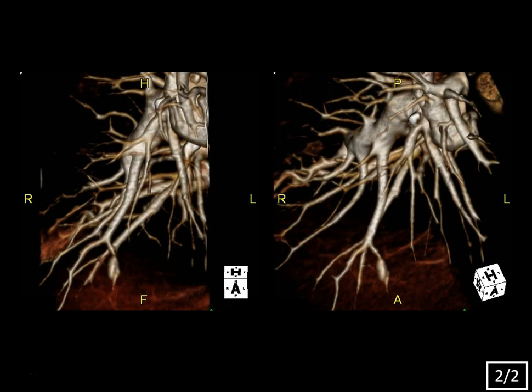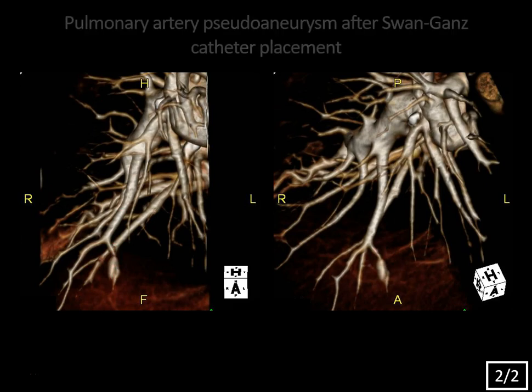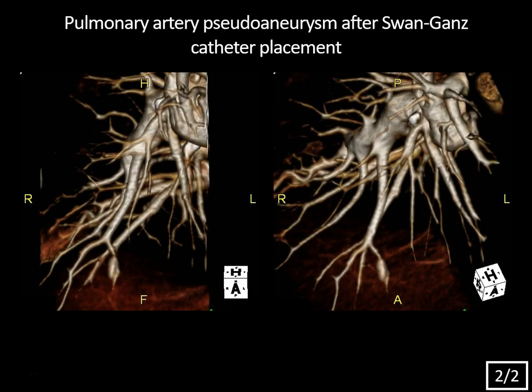The catheter was removed and the patient had a CT angiogram showing the right descending pulmonary artery with a sacculation at a distal branch — a pseudoaneurysm of the pulmonary artery caused by Swan-Ganz catheter placement. It's a pseudoaneurysm because it doesn't involve all three layers of the arterial wall. These tend to occur at the peripheral segmental or subsegmental pulmonary arteries after trauma, malpositioning of a pulmonary arterial catheter, or occasionally in the setting of malignancy or severe infection.